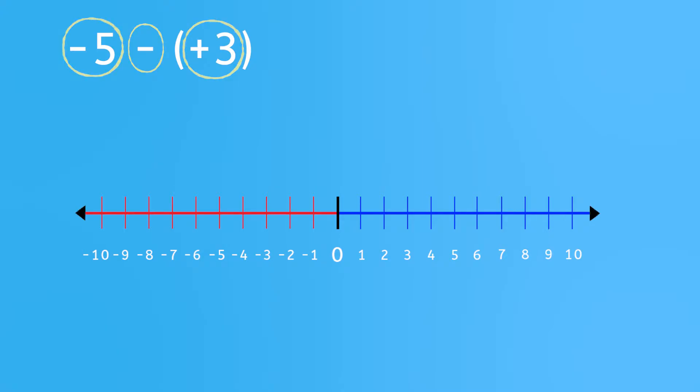To solve using the number line, remember to always start at zero and move down to negative 5. Then move to the left 3 spaces because you're subtracting 3. When we subtract, we move left on the number line. That gives you negative 8. Great! You then can write the original sentence with the correct answer like this: negative 5 minus 3 equals negative 8.